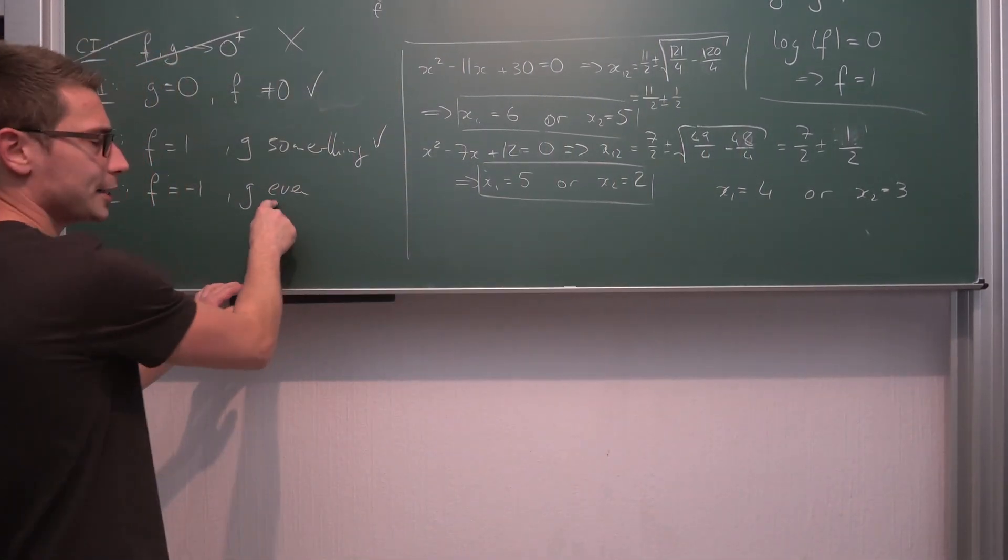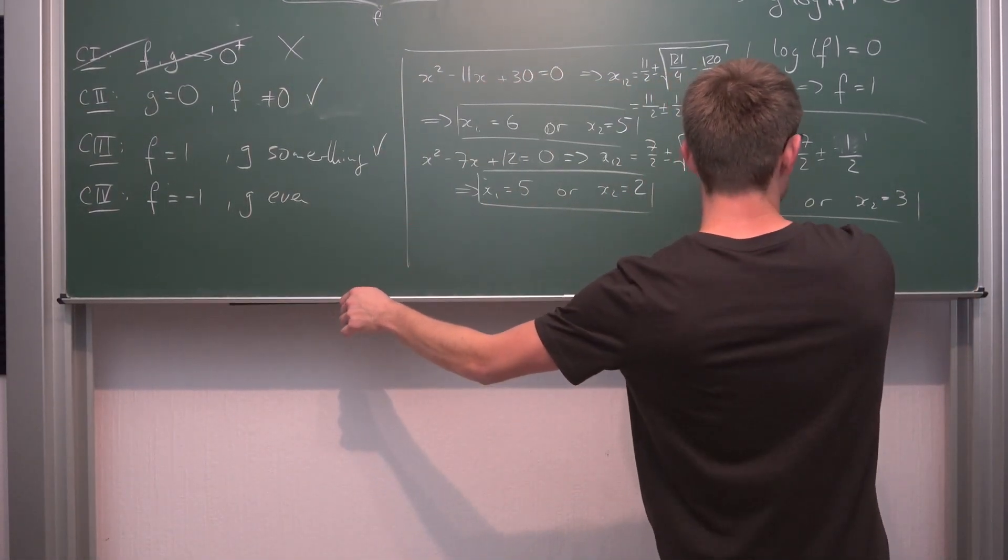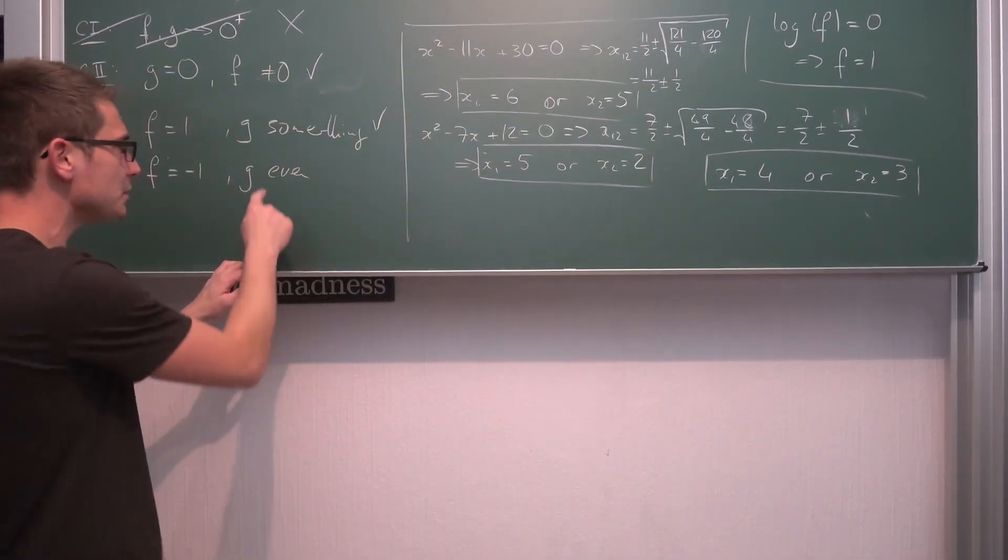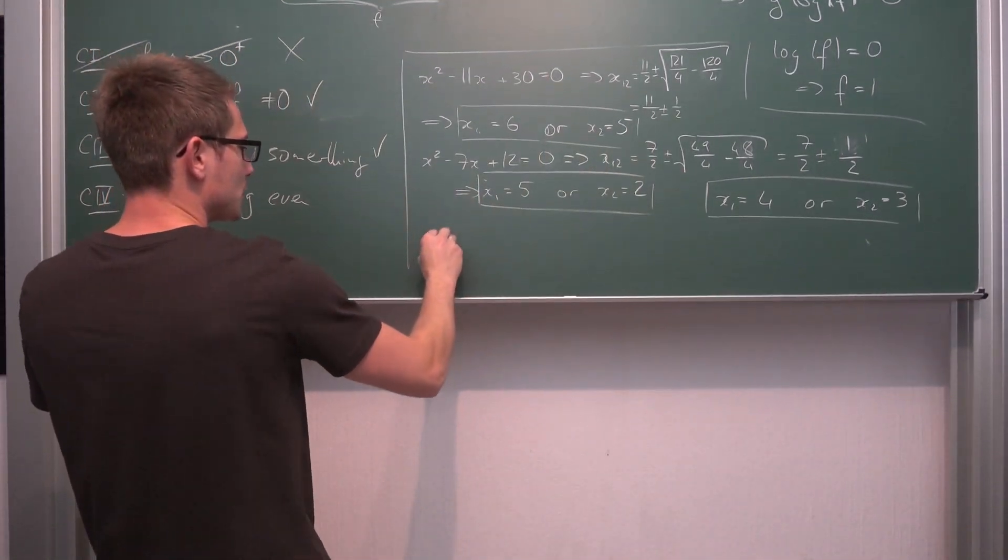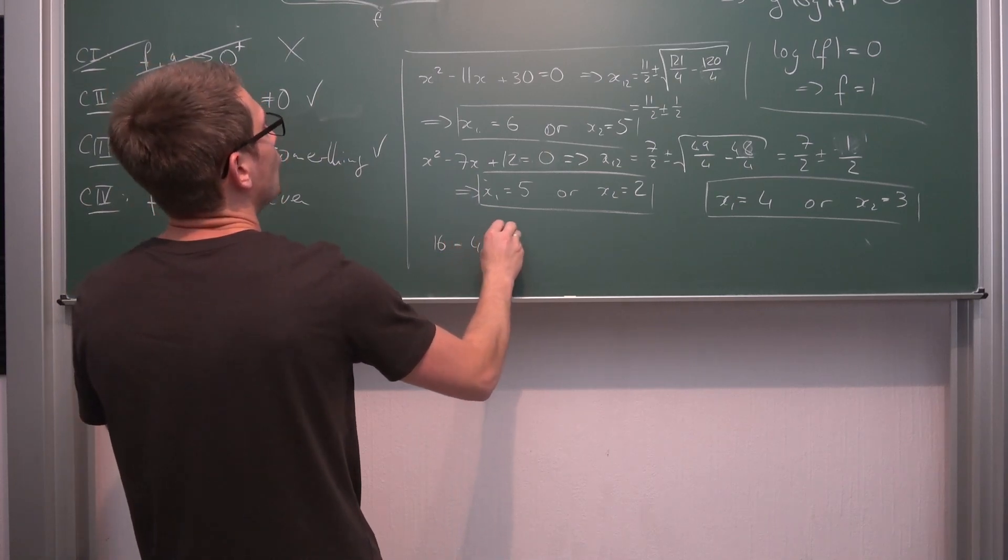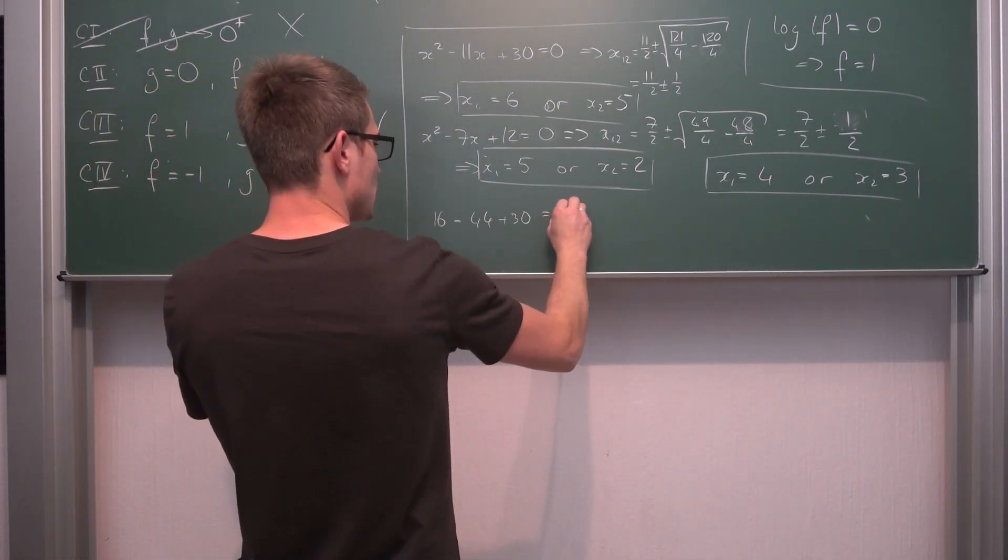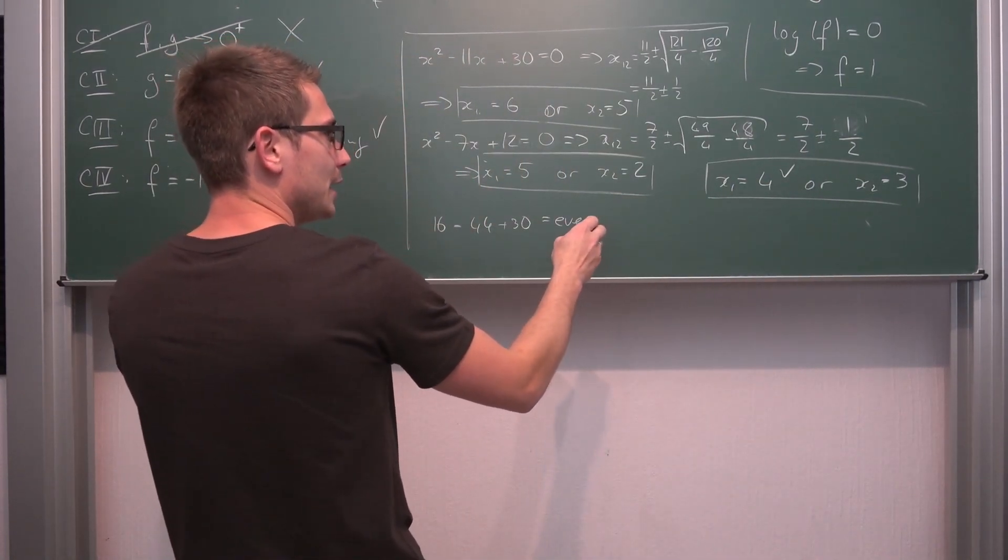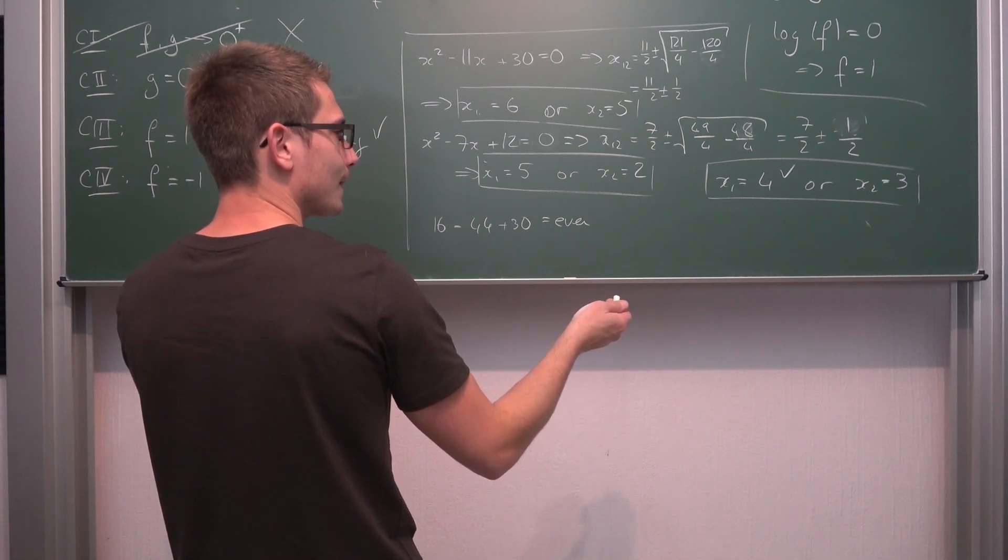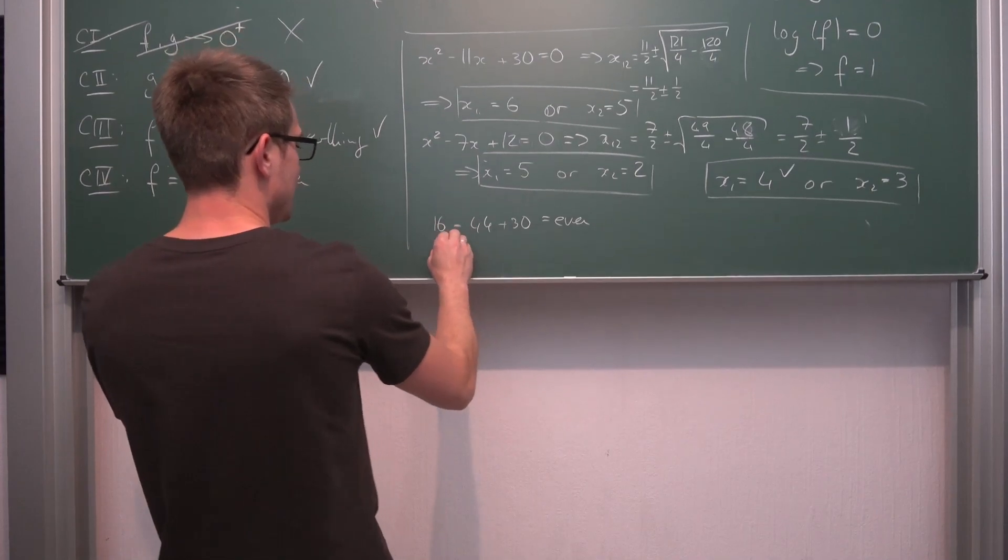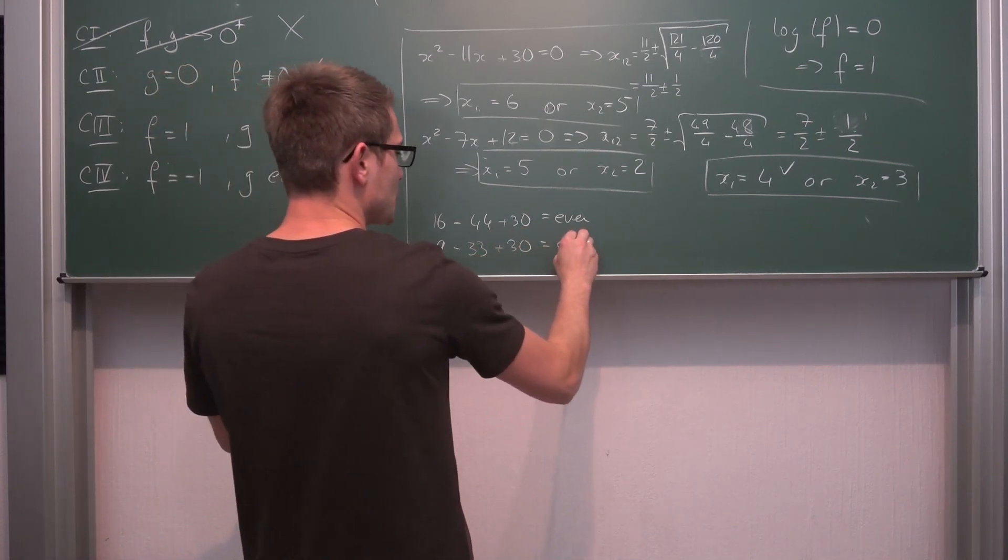So we get 1/2 this time around, meaning we get x₁ equals 8/2, so 4, or x₂ equals 3. Now this time g actually imposes another restriction on the whole problem. This is the solution if f equals negative 1. But is g even if we plug one of the two values in? This is the only case we still need to consider. If you plug 4 into here we're going to get 16 - 44 + 30. This is the addition or subtraction of even things, so this is even. So this checks out.